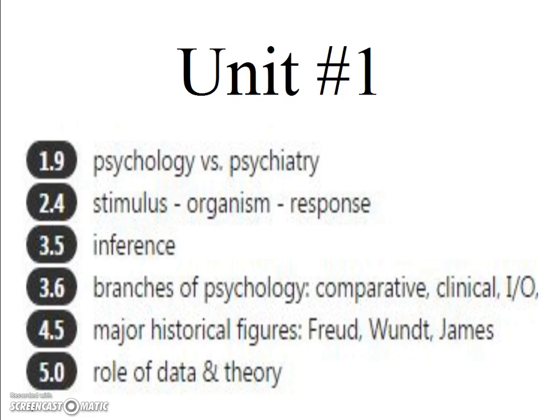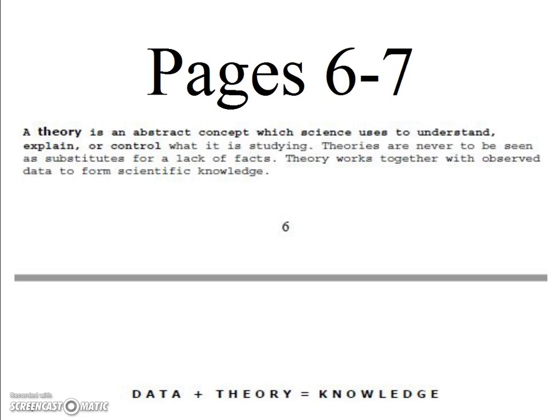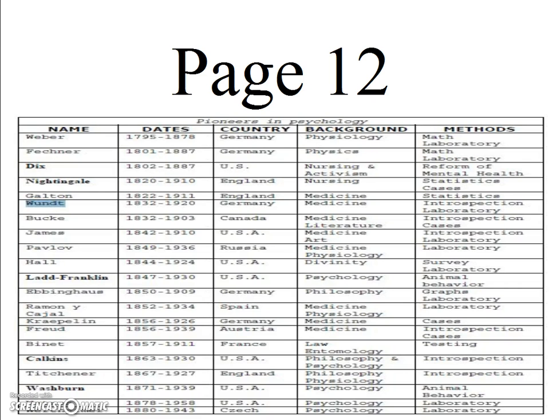In Unit 1, students said they needed more information about the role of data and theory. A theory is an abstract concept used to understand the data and to explain and control what we are working with. Data plus theory equals scientific knowledge. What I think students need to focus on in Unit 1 is more information about the founders, the great pioneers of psychology.